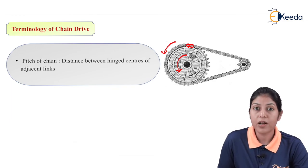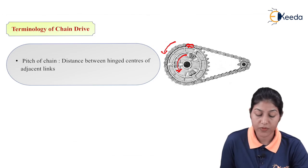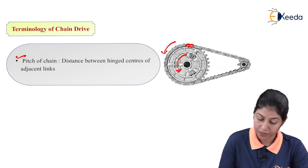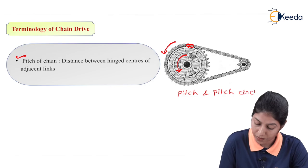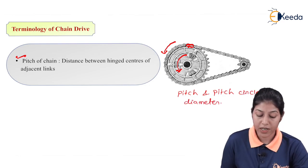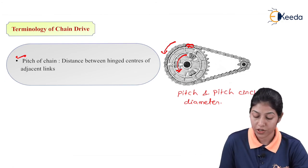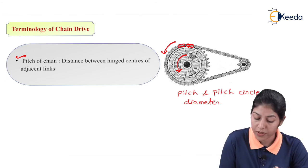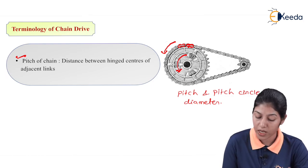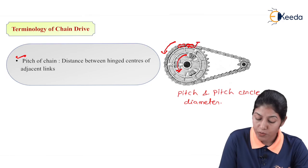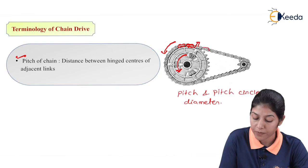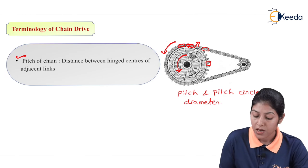Now let's discuss the terminology of chain drive. In terminology, we consider two terms: one is the pitch of the chain and another is the pitch circle diameter. The chain is in contact with the sprocket gear or sprocket wheel and is not moving out from it — that is why there is no-slip condition. We will consider one term related to the chain and one term related to the sprocket wheel.